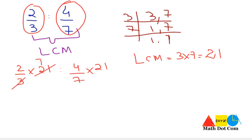3 ones are 3, so 21 divided by 3 is 7; and 7 ones are 7, so 21 divided by 7 is 3. That gives us 2 times 7 = 14, and 4 times 3 = 12. So the result is 14 ratio 12. Now this can be reduced further, as we have done in the previous example.